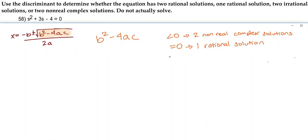And if it ends up being a positive, meaning greater than 0, it can actually go one of two ways. If it is greater than 0 and it is also a perfect square, then you're going to have two rational solutions. If it is greater than 0 but it's not a perfect square, then you're going to have two irrational solutions.